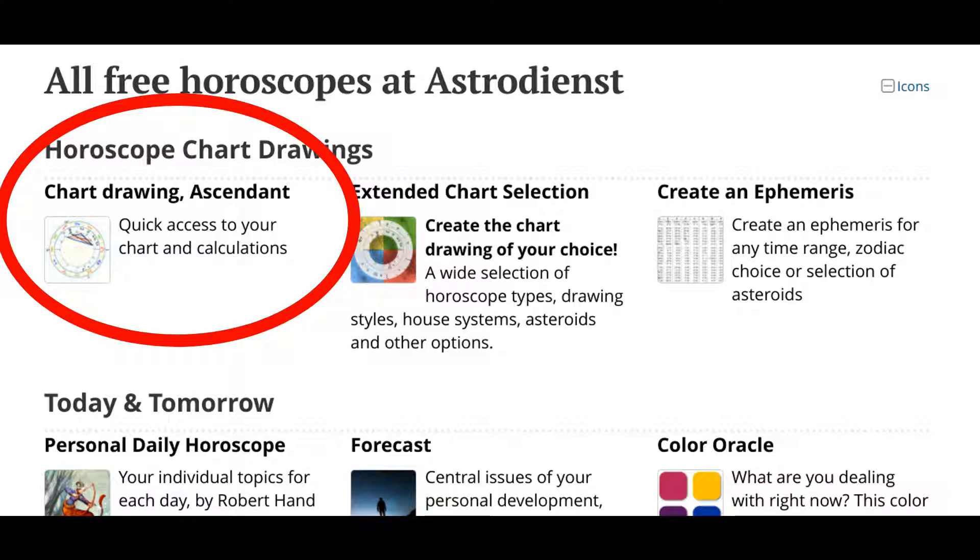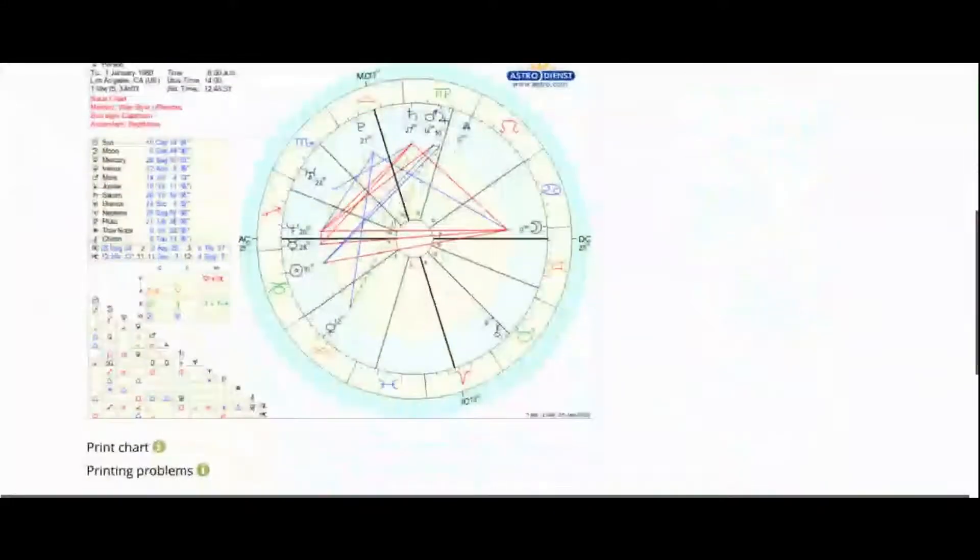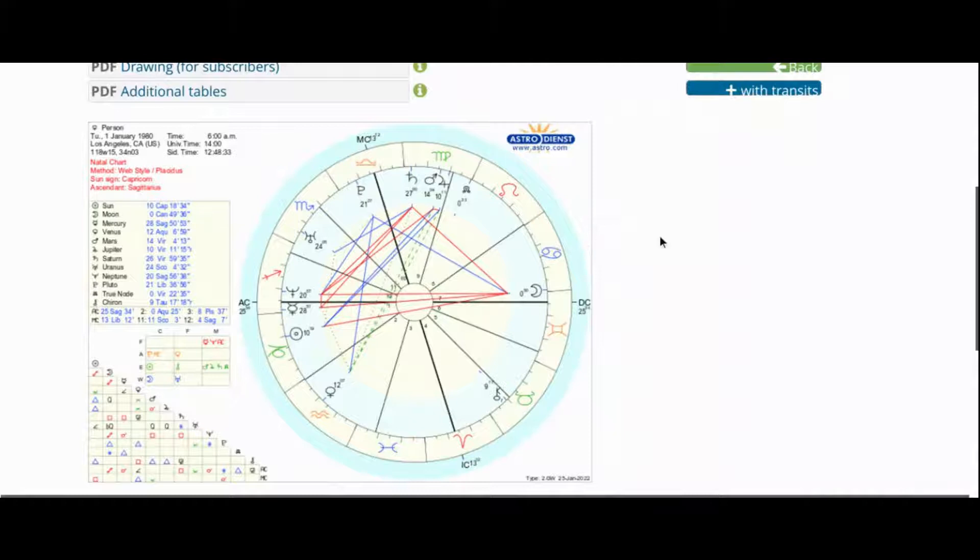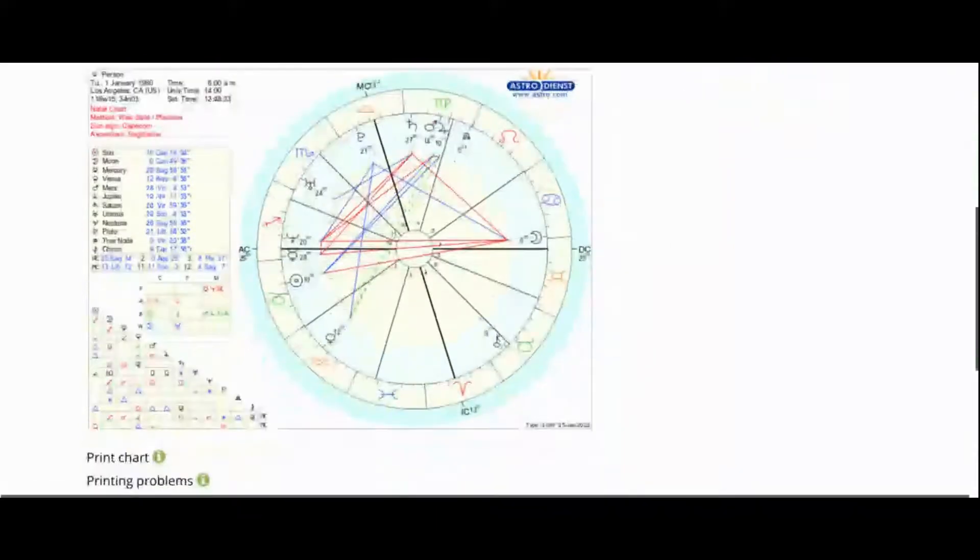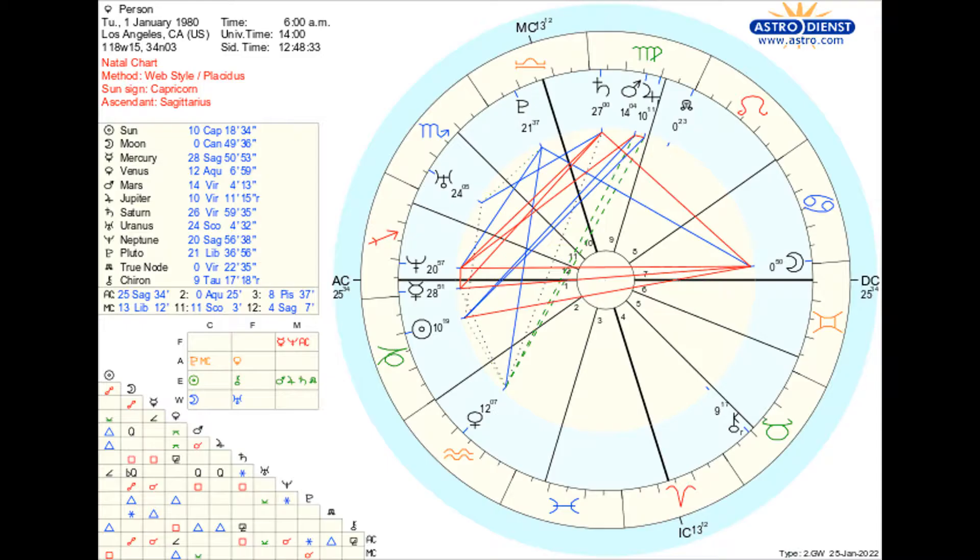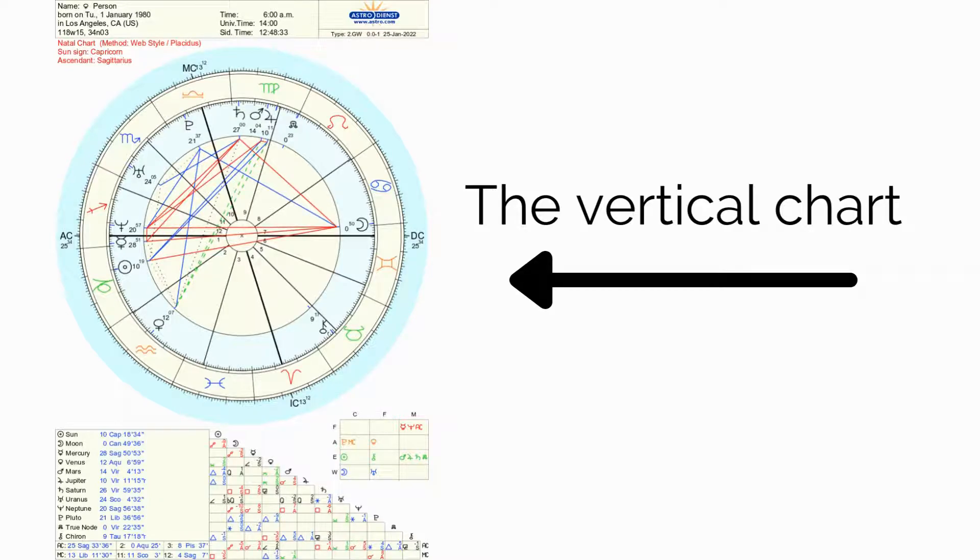Back in Free Horoscopes, there was also the option for Chart Drawing Ascendant. If you were to click on that instead of Extended Chart Selection, the chart is landscape as well. It's just a little smaller than choosing the landscape option in Extended Chart Selection, and you can't add any of the other stuff to the chart, but you can see it looks about the same.